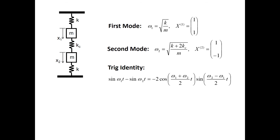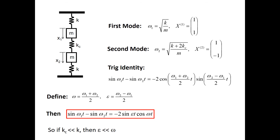There is a simple trigonometric identity: you can add or subtract the sine of ω₁t and the sine of ω₂t. In this case we subtract them. If we define omega (ω) as the average frequency and epsilon (ε) as one half of the difference between the two frequencies, we can rewrite this trig identity in a different form — it has a sine(εt) and a cosine(ωt). For weak coupling, where k_c is much less than k, ω₁ and ω₂ are very close to each other, so epsilon — one half the difference frequency — is much less than omega.